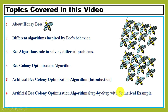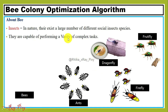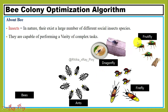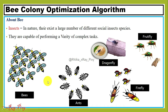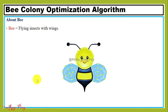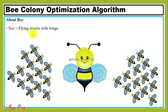In nature there exists a large number of different social insect species, and they are all capable of performing a variety of complex tasks. In previous videos we already discussed a number of algorithms based on the behavior of different insects, for example the Fruit Fly Optimization Algorithm, Dragonfly Optimization Algorithm, Firefly Optimization Algorithm, and Ant Colony Optimization Algorithm. In this video we will discuss the Bee Colony Optimization Algorithm, inspired by the behavior of honey bees in nature.